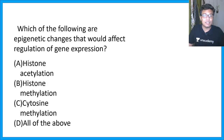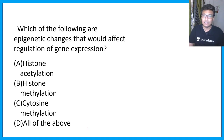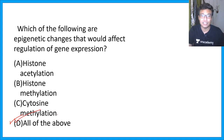Which of the following are epigenetic changes that affect regulation of gene expression? Options are histone acetylation, histone methylation, cytosine methylation, or all of the above. The correct answer is all of the above — each of these modifications determines transcriptional changes and how much a gene would be expressed.